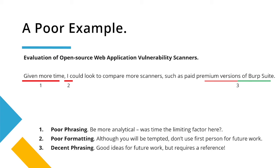99.9% of all the time, when someone writes 'given more time,' the limiting factor is never time. It might be time when it came to you writing it last minute and you had to think of a sentence, but 'given more time' is never actually the limiting factor — I've never seen it. It could be your technical knowledge, it could be a lack of awareness of third-party resources, or it could just be your effort. But it's never time. Make sure you're more critical and give better explanations of why that is what you're saying.